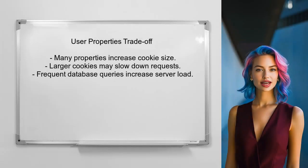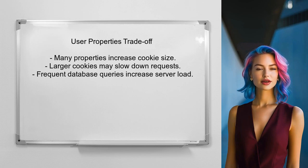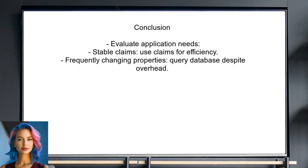For the user's specific case, if they have many properties like first name, last name, and address, they should consider the trade-off between cookie size and database load. A larger cookie may slow down requests, while frequent database queries can increase server load. In conclusion, the user should evaluate their application's needs. If claims are stable and not frequently changing, using claims may be more efficient. However, if properties change often, querying the database might be necessary despite the overhead.